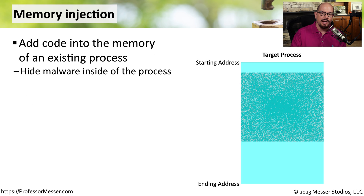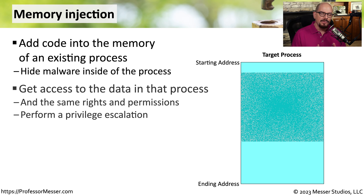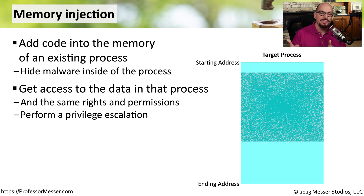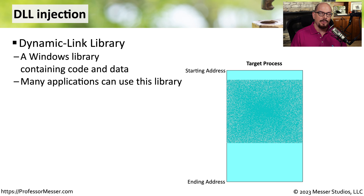Here's a block diagram that describes a process or an application that's running inside of memory. In this process, there is a starting address and an ending address. If you wanted to inject malware into this process, you would need to inject it somewhere between those two addresses. Not only does this allow malware to avoid detection by anti-malware that's just looking for a malicious process, but it also allows this malware to have the same rights and permissions as the process that it's injecting into. This means it's a very easy way for the malware to suddenly have privileged escalation or higher rights and permissions than what it would normally have on that system.